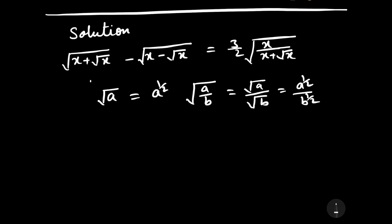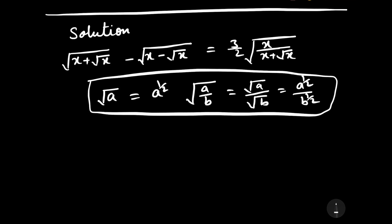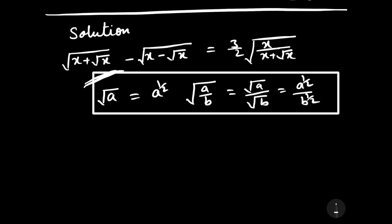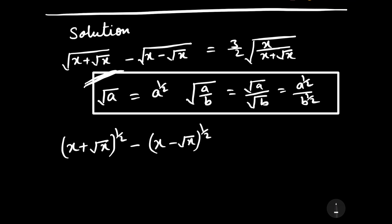With the help of this formula, we can write the above equation as: (x plus square root of x) to the power 1/2 minus (x minus square root of x) to the power 1/2 is equal to (3/2) x to the power 1/2.